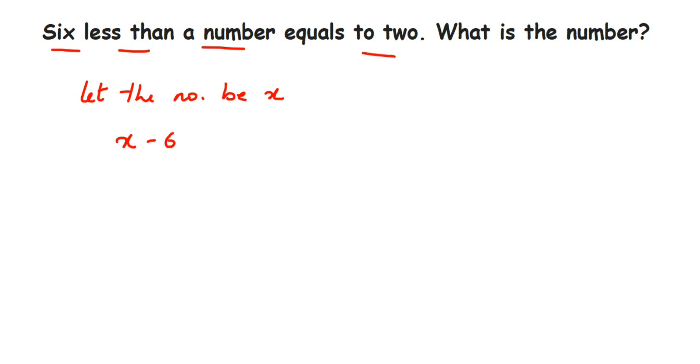Again, listen: they have given that six less than a number. So from a number it is six less. So x minus six, because x is unknown to us, it's a number we have assumed. So x minus six is equal to two.